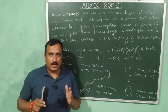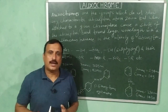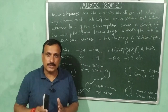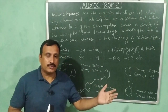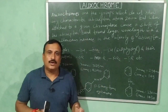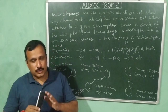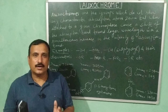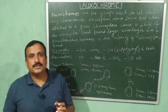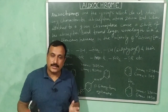In my previous video I discussed the concept of chromophore — any functional group which absorbs electromagnetic radiations in the UV-visible region, irrespective of whether it imparts color to the compound or not, is called a chromophore. I also told you that the majority of chromophores absorb below 220 nm, a region which cannot be easily studied with commercially available or ordinary spectrophotometers.